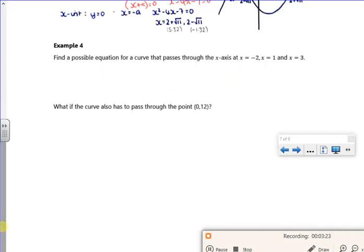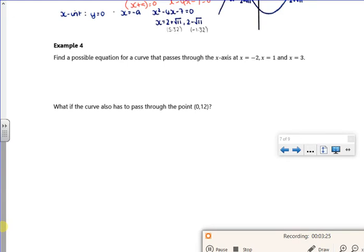Right, let's have a look at Example 4 then. So it says, find the possible equation for a curve that passes the x-axis at minus 2, 1, and 3. Right then. So that could be x plus 2, that could be x minus 1, that could be x minus 3. So I think it could be x plus 2 times x minus 1 times x minus 3.